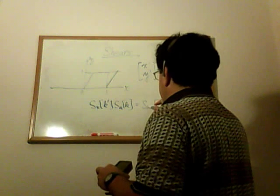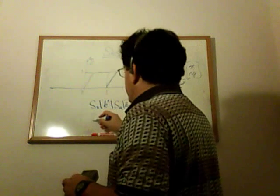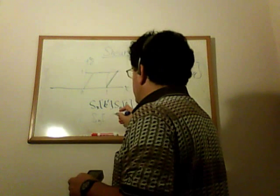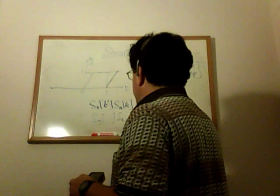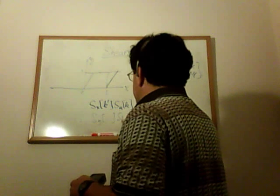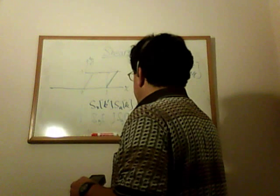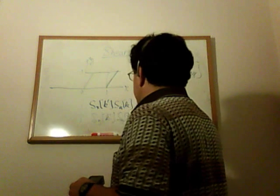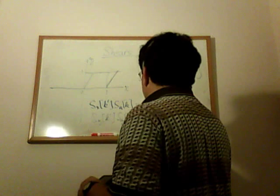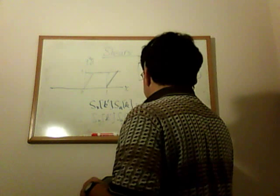this is just equal to shear with a parameter of K plus K prime. And similarly for Y, if you shear in the Y direction by parameter K, and follow that by a shear in the Y direction with parameter K prime, you get shear SY(K plus K prime).